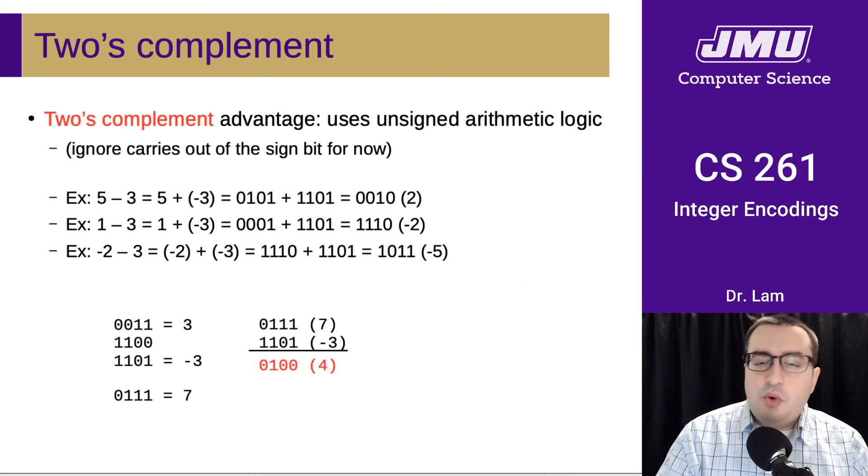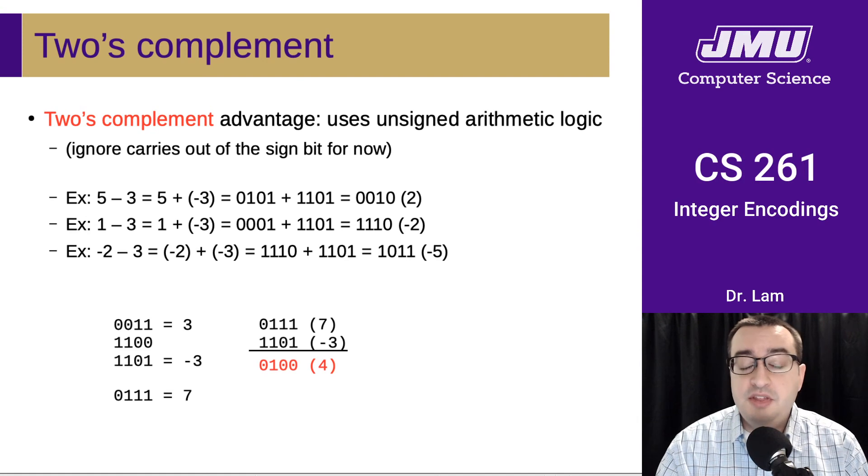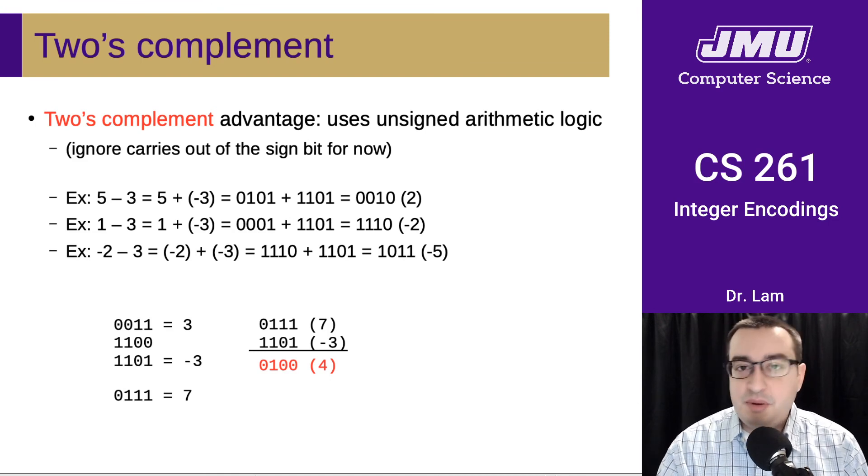So you might be wondering why we would use such a convoluted scheme to store numbers. And the reason that we do is that the arithmetic works out very nicely. And in fact, you can just use unsigned arithmetic and you just get the right answer. And this may seem a bit magical right now.